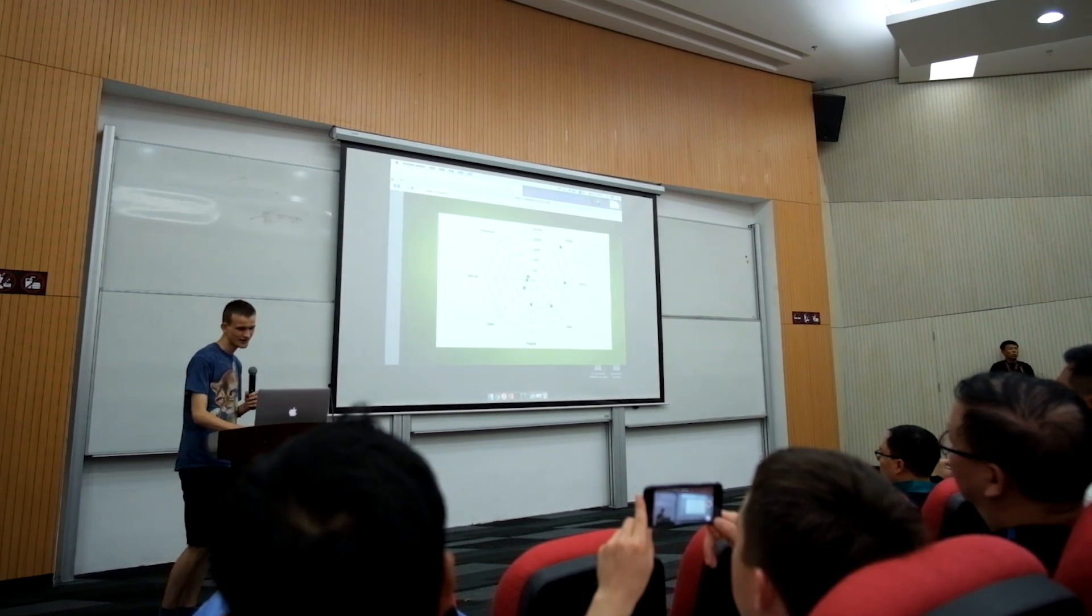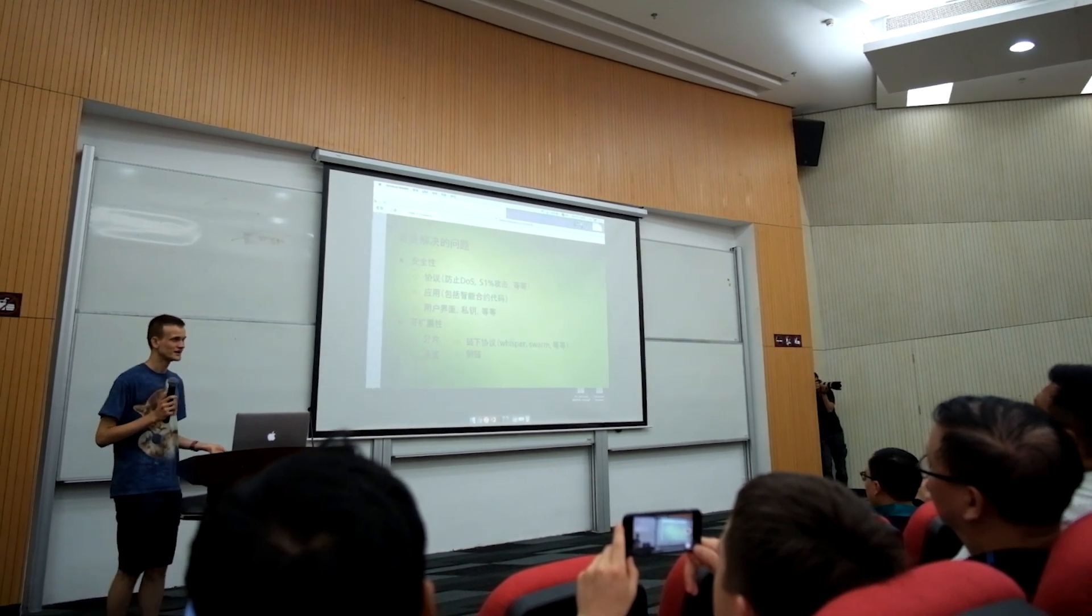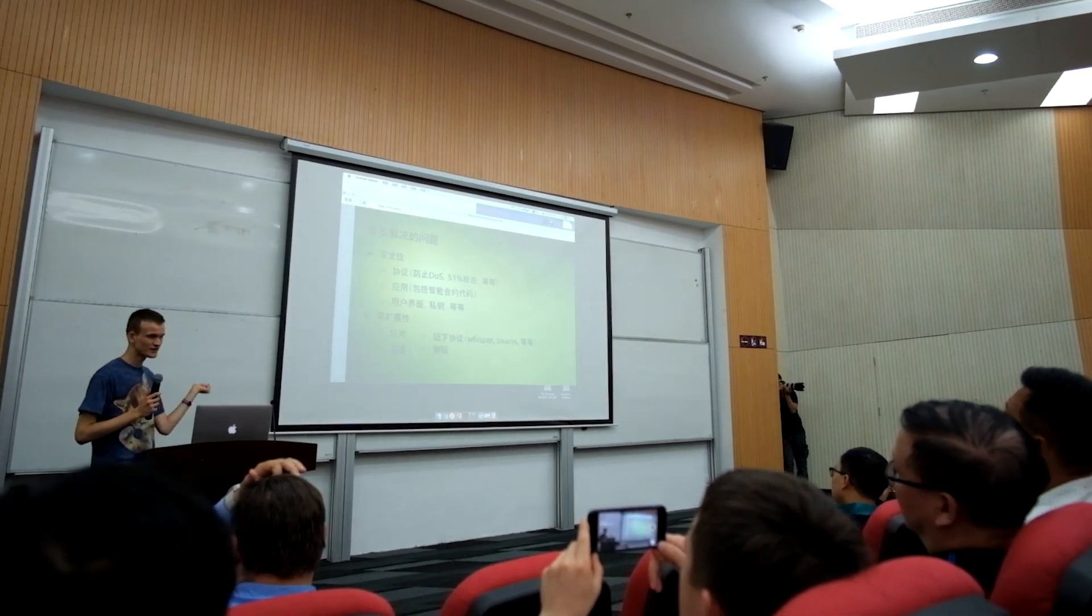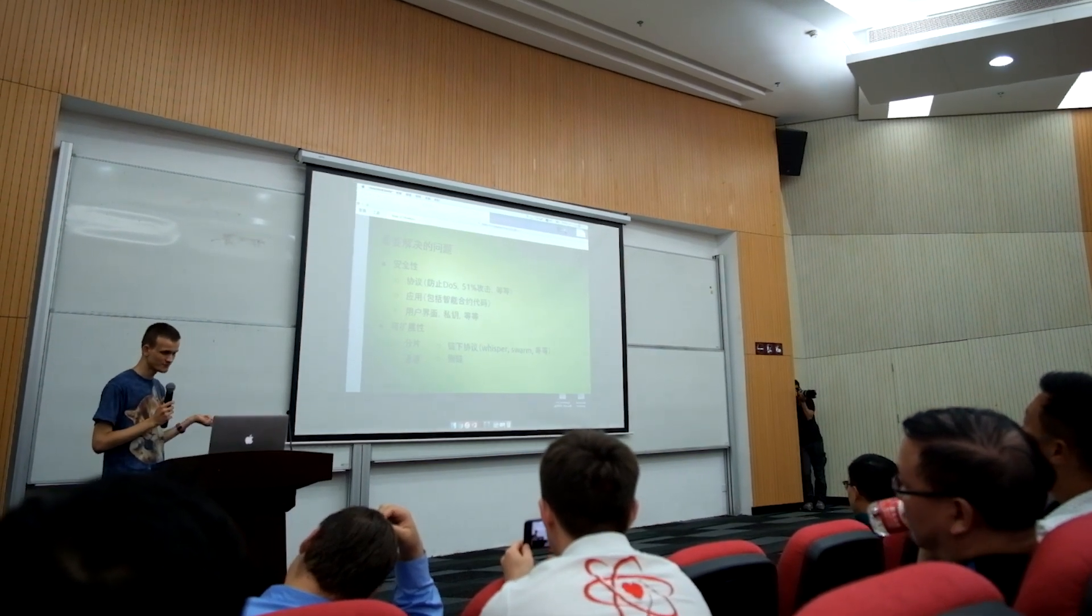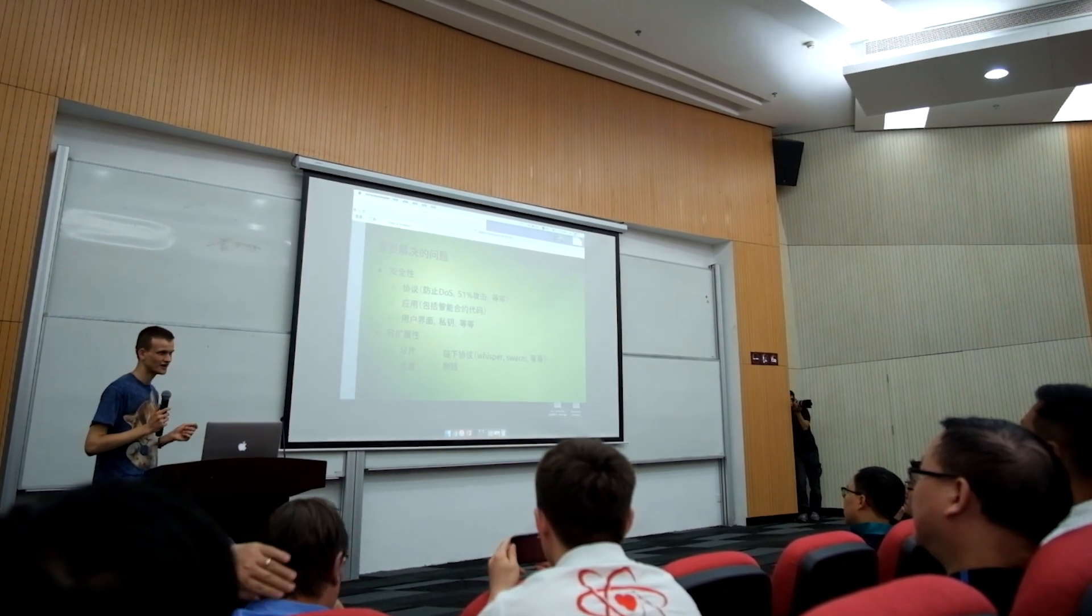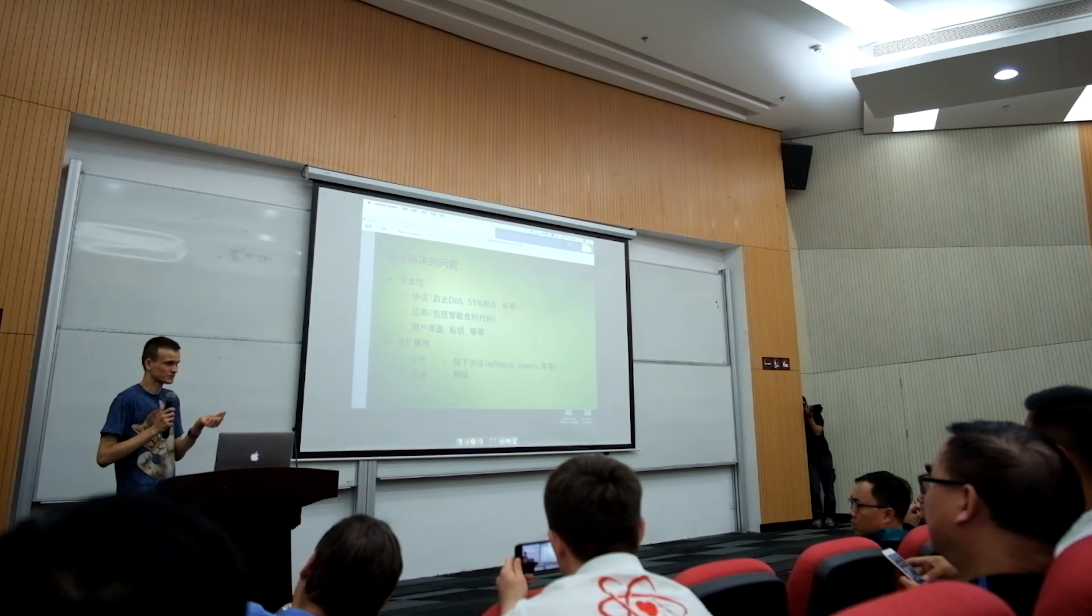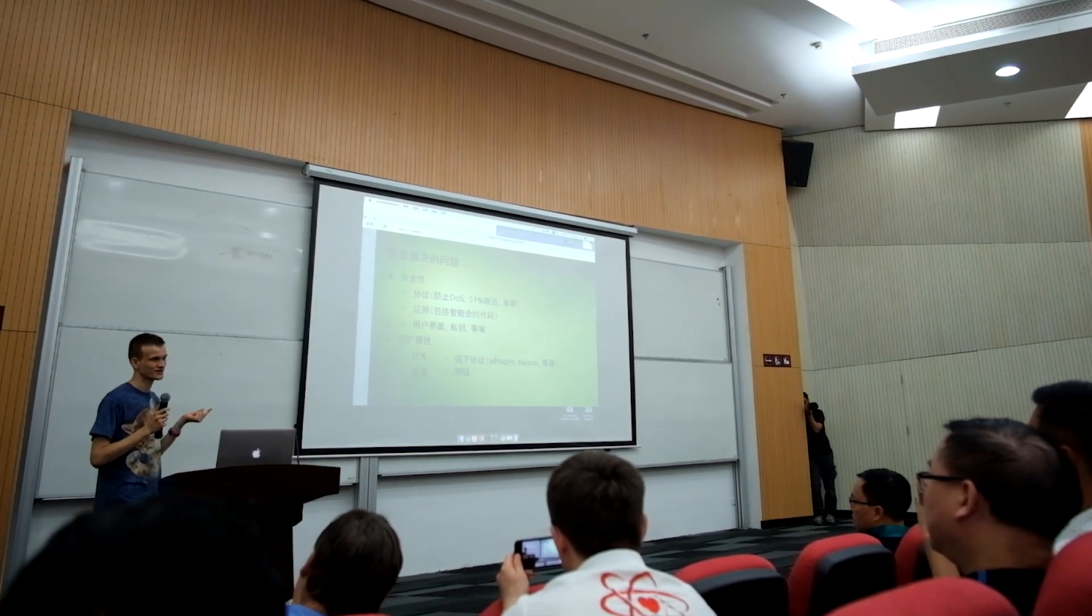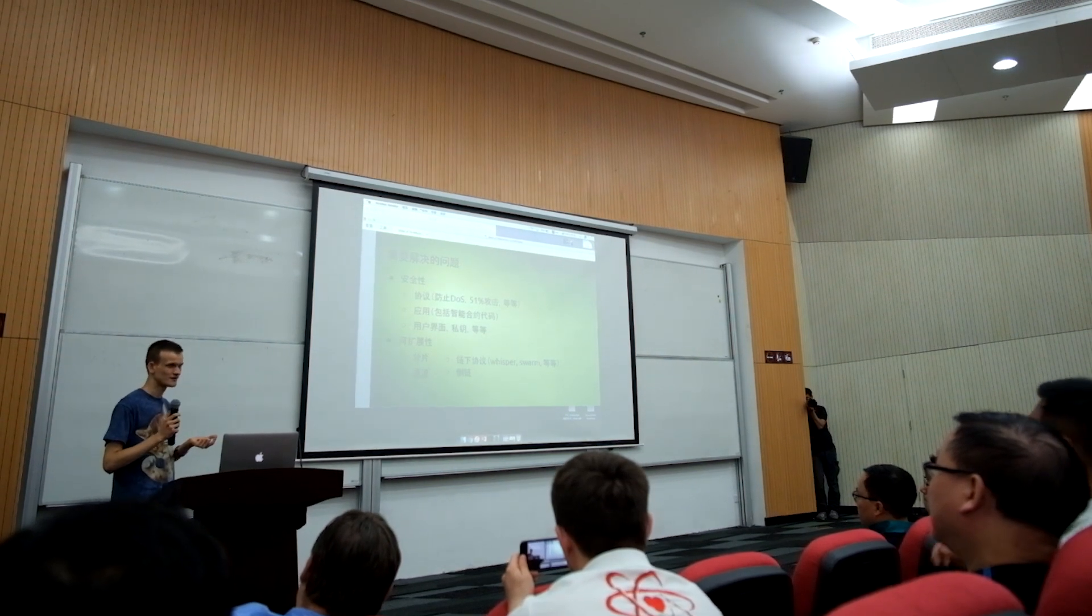This is only one challenge. I think there are several different challenges we have to solve if we want blockchains to be used much more than they are now. Aside from scalability, another very major and important one is security. The blockchain protocol itself needs to be secure—able to resist DDOS attacks, 51% attacks, other kinds of attacks. Blockchains are completely open systems. Anyone can interact with a blockchain, participate in a blockchain. This also means anyone can attack a blockchain. The need for blockchain protocols to be secure is very important.